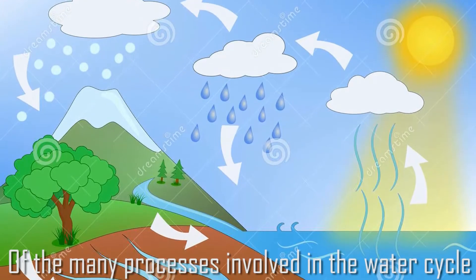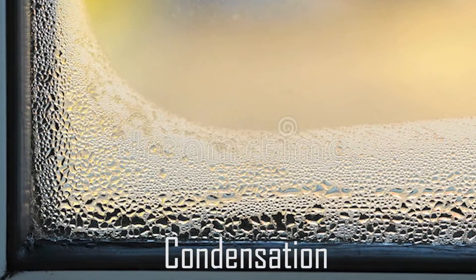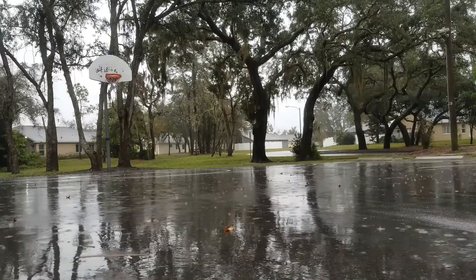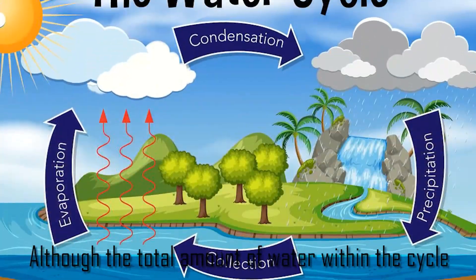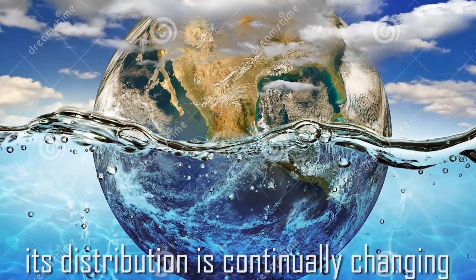Of the many processes involved in the water cycle, the most important ones are: Number 1, Evaporation; Number 2, Condensation; Number 3, Precipitation. Although the total amount of water within the cycle remains essentially constant, its distribution is continually changing.